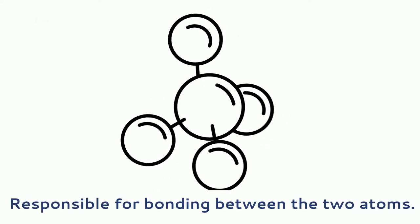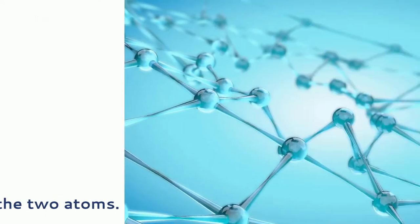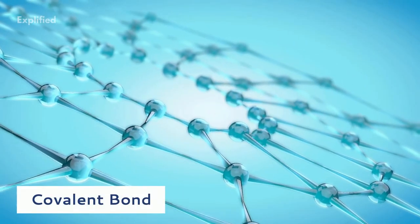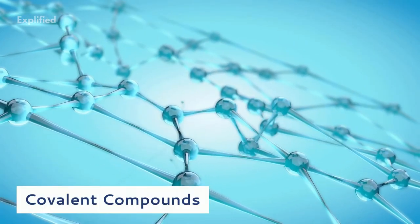This shared pair of electrons contributes to the stability of both atoms and is said to be responsible for bonding between the two atoms. This bond is known as a covalent bond and the compounds obtained are known as covalent compounds.